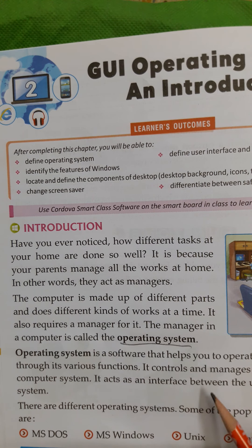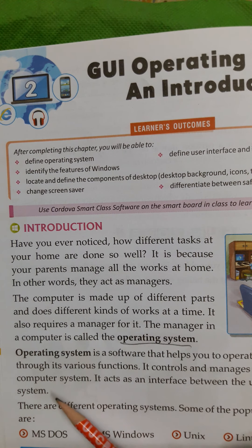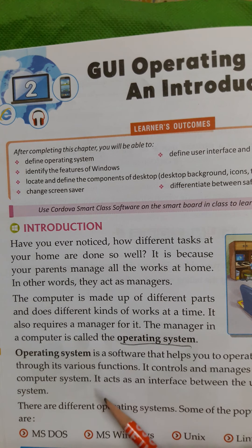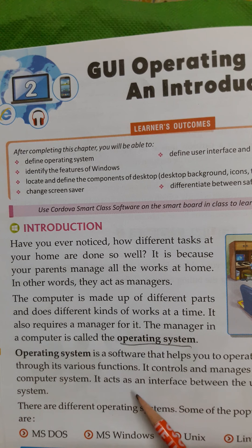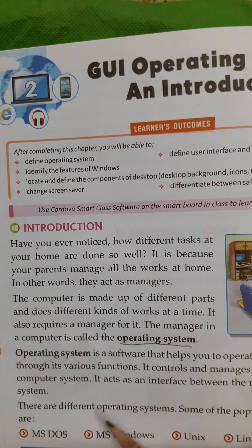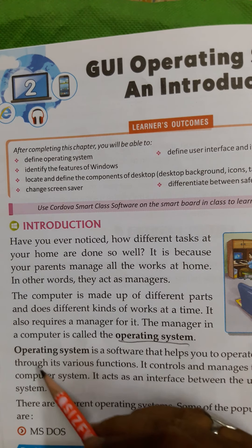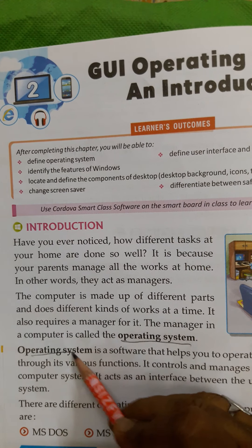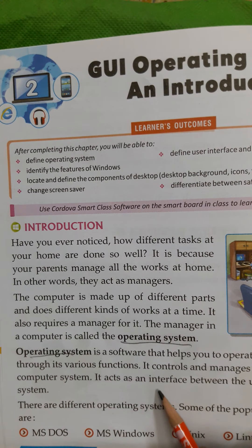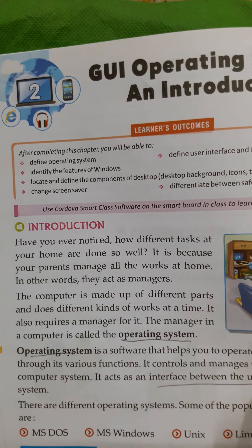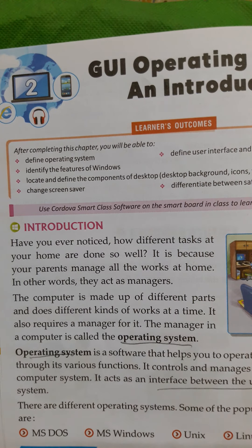The operating system is a software that helps you to operate the computer system through its various functions. It controls and manages the different parts of the computer system. It acts as an interface between the user and the computer system.